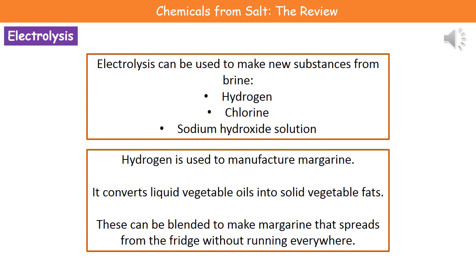Once we've got our brine solution, we don't necessarily want to use it just as brine. What we want is to get those chemicals that make up our brine out of it. So we're going to use electrolysis — the same process we looked at when getting pure copper — to actually split our brine solution into useful substances. When we carry out electrolysis on brine, what we generate is hydrogen, chlorine, and sodium hydroxide solution.